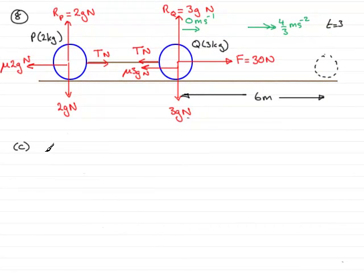Now, in part C, we've got to find the tension in the string here. There are several ways I could do this, but what I've got to do is consider either particle P or particle Q and resolve to the right and get an equation involving force equals mass times acceleration.